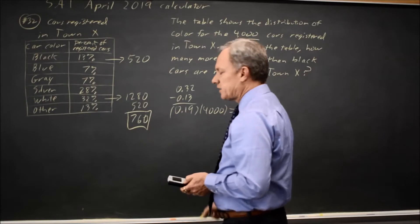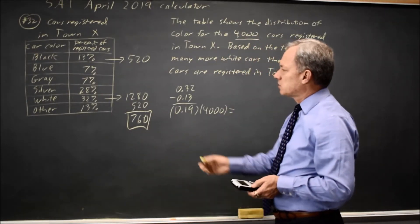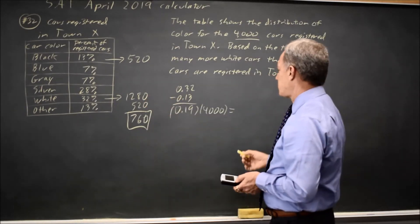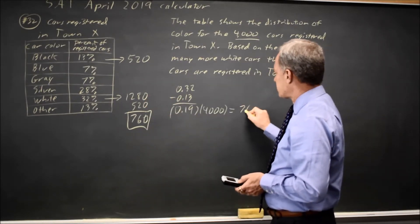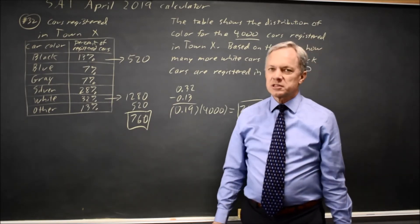19% of 4,000 would be the number of white cars there are more than the number of black cars. And that would also be 760. And either approach is completely correct.